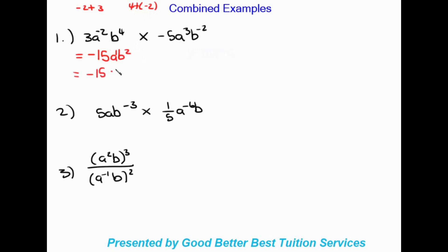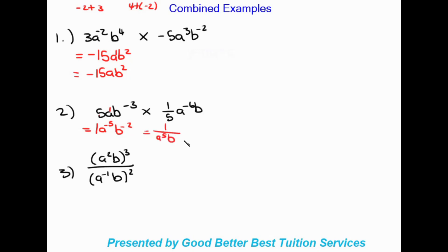The final answer for that example is negative 15 a b squared. Next example: the coefficient five times one fifth gives one. Then a: one minus six gives negative five, and b: negative three plus one gives negative two. Since a and b both have negative exponents they go to the bottom, giving one over a to the five, b squared.